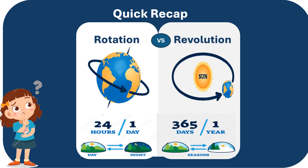I hope now you understand the concept of rotation and revolution. Let's have a quick recap. Rotation is a concept wherein the Earth spins around its axis, which causes the effect of a day and night. It takes 24 hours for Earth to rotate or spin around the axis.